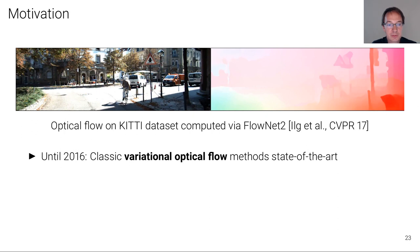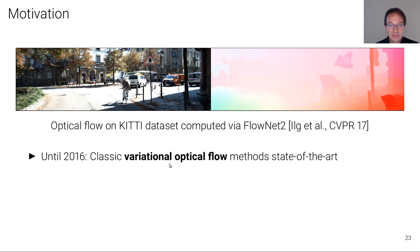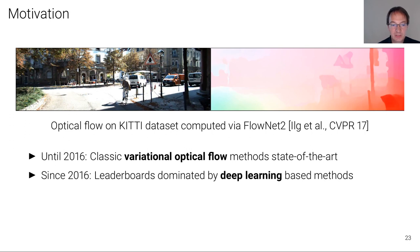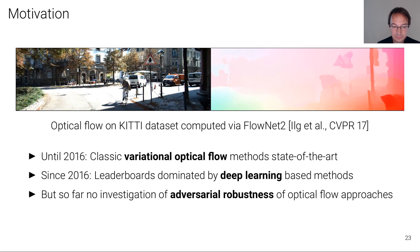Here's an example of optical flow estimation from the KITTI dataset produced by the FlowNet2 algorithm — as you can see it's pretty precise, recovering the shape of objects in the environment. Until 2016, classical variational optical flow methods were state of the art, but since 2016 the KITTI leaderboard became dominated by deep learning-based methods. However, so far there has been no investigation of the adversarial robustness of these optical flow approaches — and that's what we'd like to look at today.